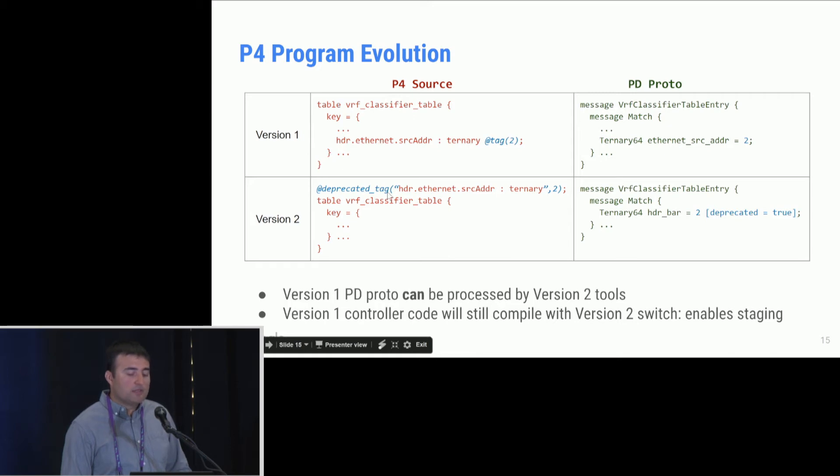And that would allow us to create a deprecated match over here on the PD side. So what this essentially means is that an SDN app that was trying to populate a flow entry using this proto does not need to be upgraded at the same time as the P4 program itself. So you may upgrade the P4 program, the switch, your new switch may realize the P4 program, but the app itself doesn't need to be upgraded at the same time. So we can stage the upgrades. The other good thing that this gives you is that any logs that you see from version one can now be processed by version two tools, because this particular entry did not go away from my PD proto.